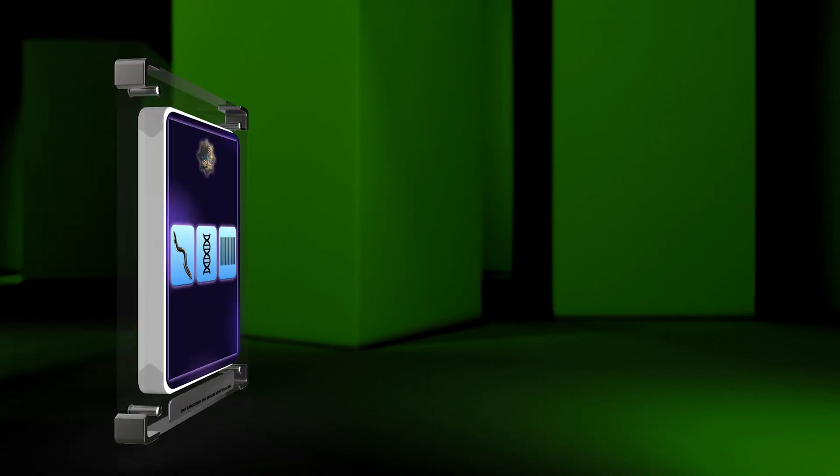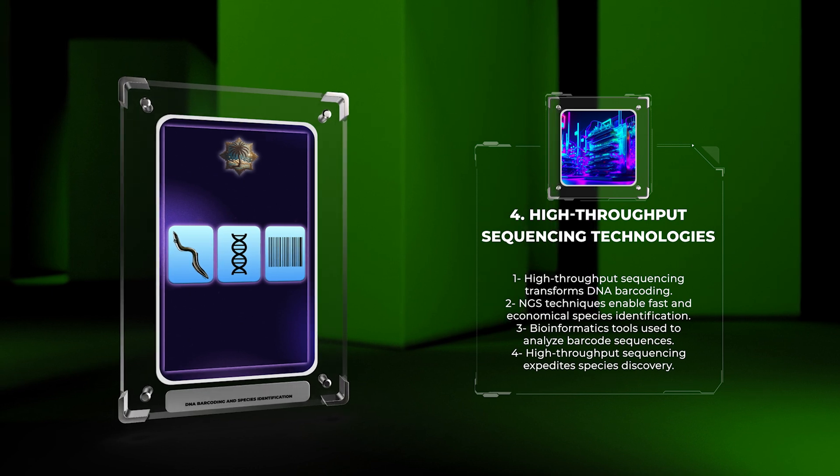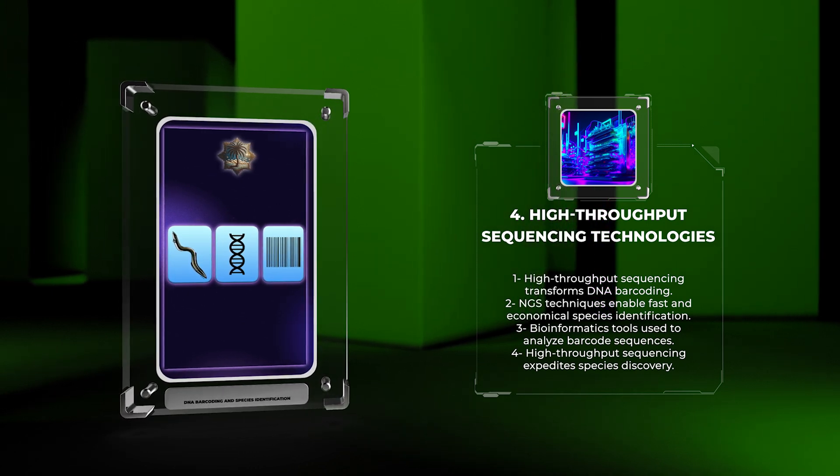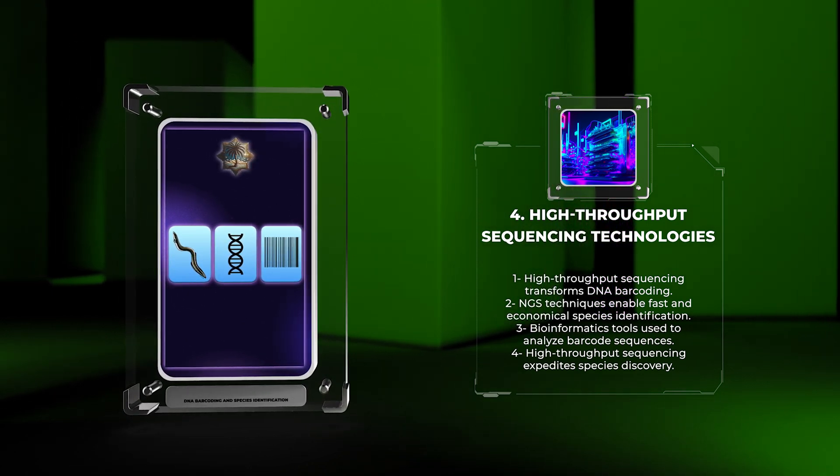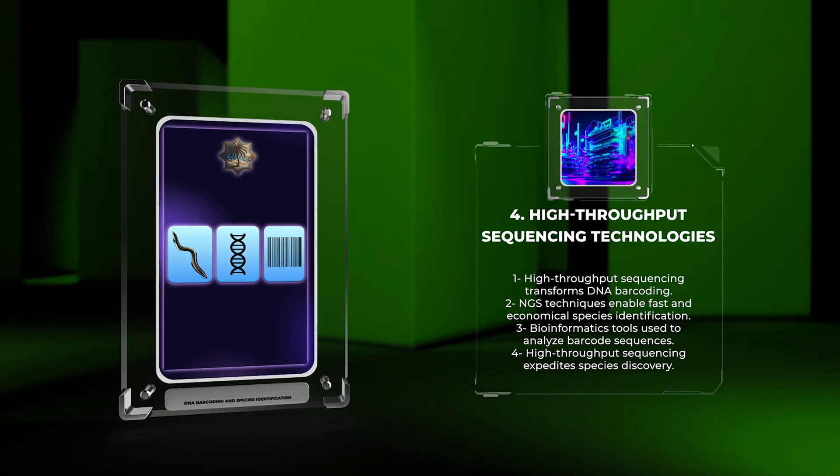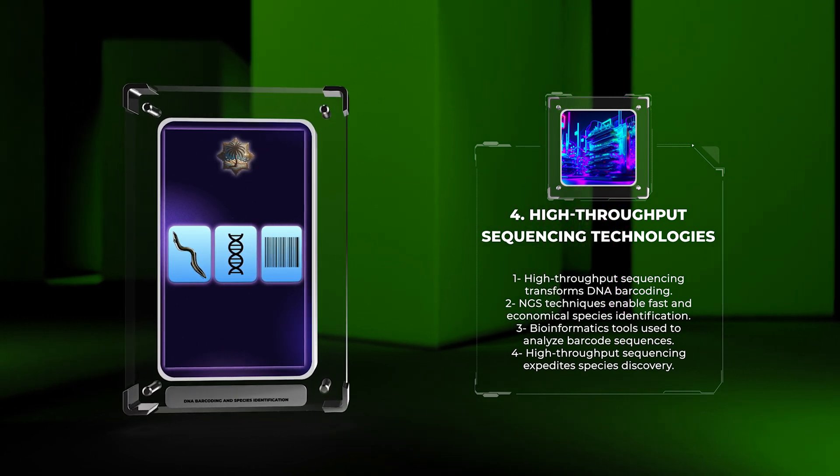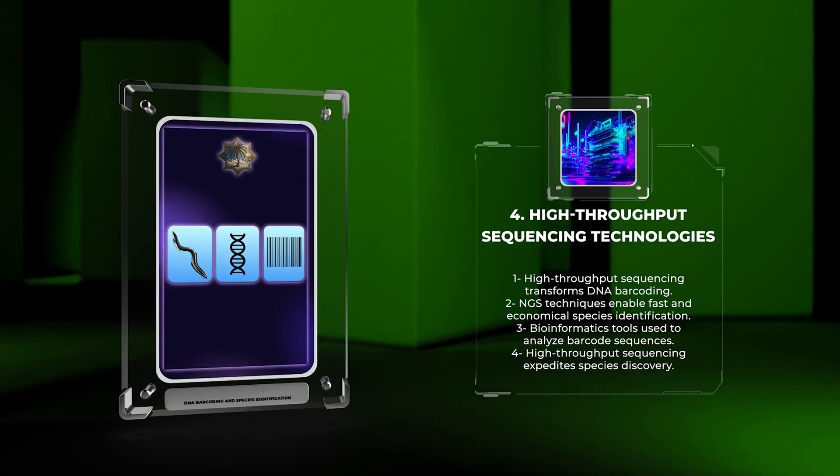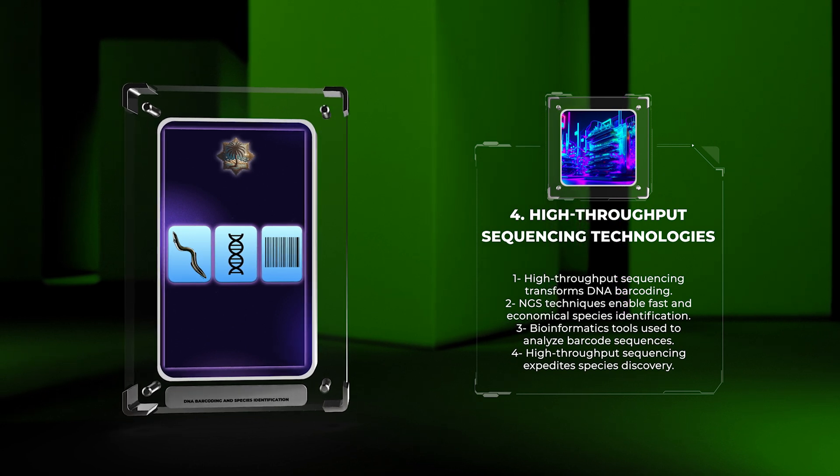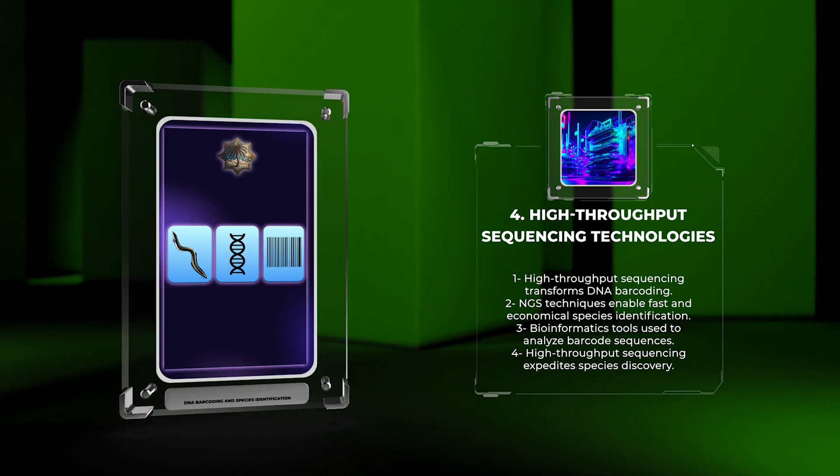Through high-throughput sequencing, DNA barcoding has been transformed. Next-generation sequencing (NGS) techniques like Illumina, Roche 454, and Ion Torrent enable the simultaneous sequencing of numerous DNA fragments, facilitating fast and economical species identification. By employing bioinformatics tools to extract and analyze barcode sequences, researchers can process the substantial amount of data produced by NGS platforms. High-throughput sequencing has greatly expedited species discovery, especially in intricate environments such as microbial communities.